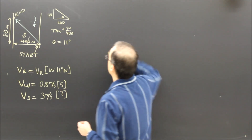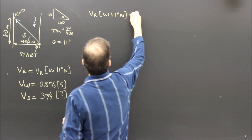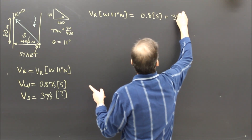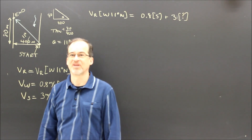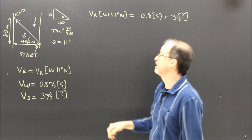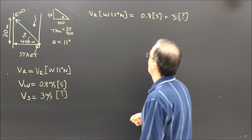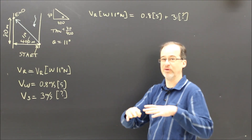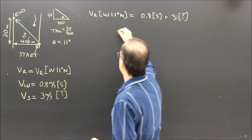Let's write down our equation: VR west 11 degrees north equals 0.8 south plus 3 meters per second at some angle. All I have to do is solve this triangle — I can find the direction of the 3 m/s vector and find how fast I'm actually going in the resultant, which is useful for finding the time. It's not like our regular problems where we just break components and add them up to find the resultant — I have to finagle it a bit.